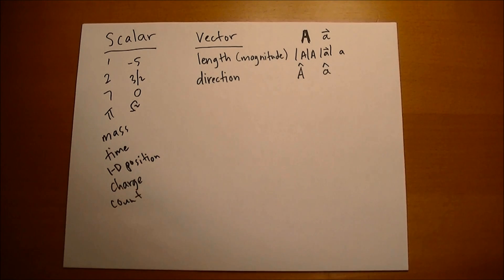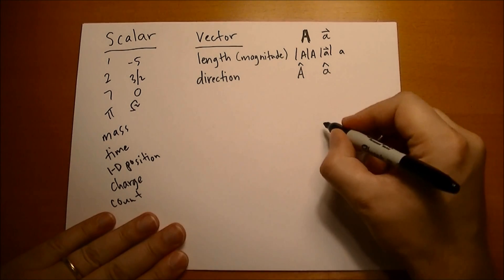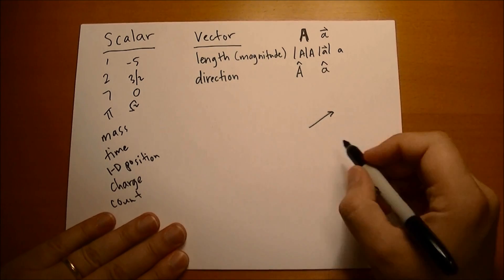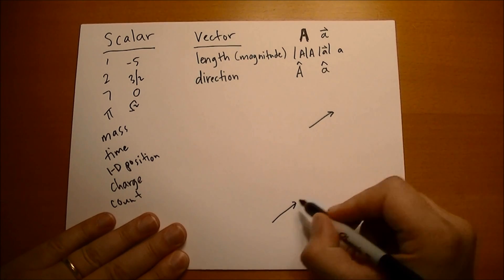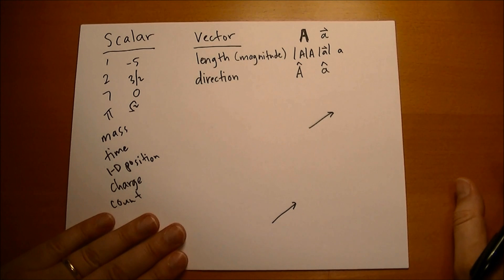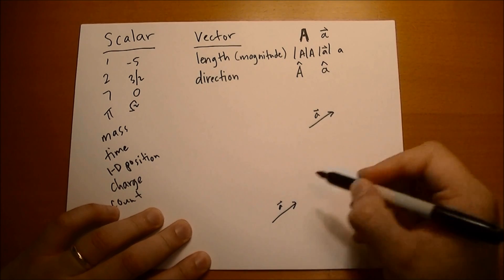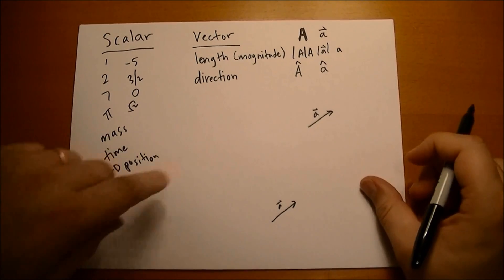What do vectors look like? Well, it's kind of hard to describe what they look like on a piece of paper. You can draw an arrow. The length is important, the direction is important. It doesn't matter where the arrow is on the page. It's the same vector as long as it has the same length and same direction, just like a three in one corner of the page is the same as a three in the other corner.